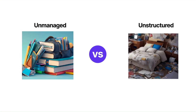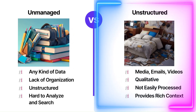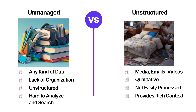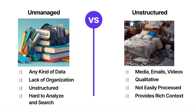The key difference: unstructured data refers to data that does not have a specific format or structure — like text, images, or videos. Unmanaged data, on the other hand, refers to data that is not adequately organized or stored in a structured manner. In simpler terms, unstructured data is about the type of information, whereas unmanaged data is about how the information is organized — or not organized.